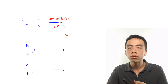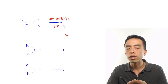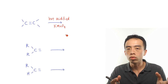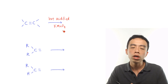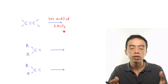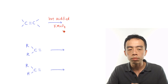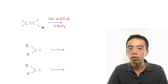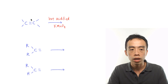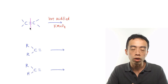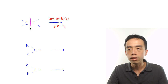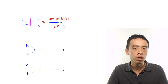For alkene functional groups, what happens when it is subjected to hot acidified KMnO₄ — or KMnO₄ in dilute H₂SO₄ with heat — is that the carbon-carbon double bond would break, and we get two different fragments.